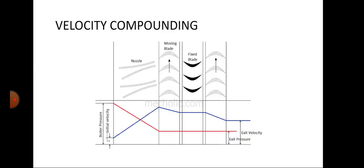We can further discuss the types of compounding. There are three types. The first one is velocity compounding. In velocity compounding, the stage consists of a set of nozzles at the entry, followed by a set of moving blades, then a set of fixed blades, and again a set of moving blades. The stage is constructed so that the steam flows from left to right.